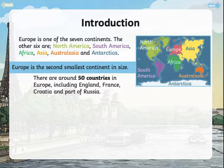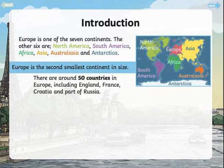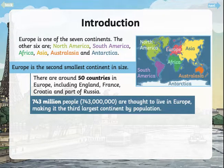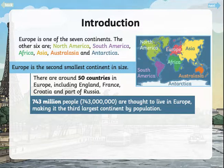There are around 50 countries in Europe, including England, France, Croatia, and part of Russia. Not all of Russia is in Europe — Russia is an enormous country and it spans both Europe and Asia. 743 million people are thought to live in Europe, making it the third largest continent by population. So it's a small continent but with quite a large population, meaning people must live closer together in Europe than in some other continents.